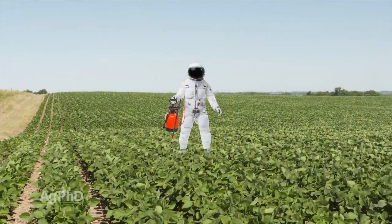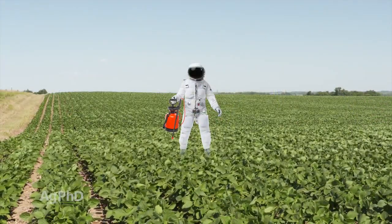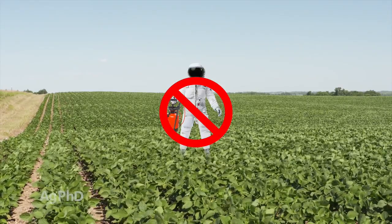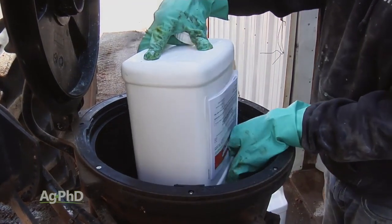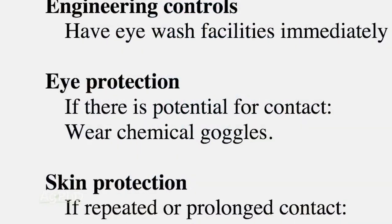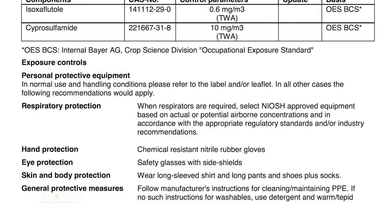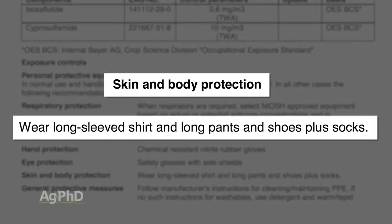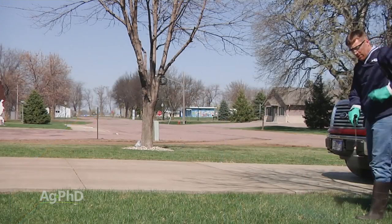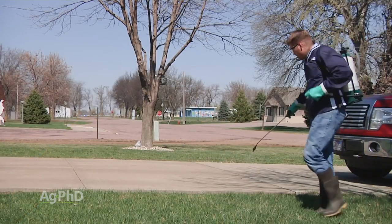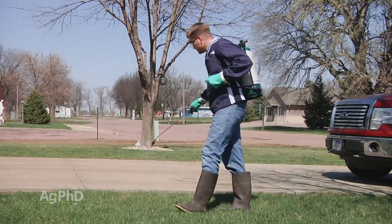Let me start by talking about personal protective equipment. It sounds like you have to be in an astronaut suit, but that's not what I mean. A lot of times the labels will say make sure you're using rubber gloves, and on some products — if there's an eye safety issue — they'll suggest goggles. Or maybe a long-sleeved shirt if skin exposure could be a problem. For me, no matter what I'm using, I'm going to wear rubber gloves and goggles just to be on the safe side.